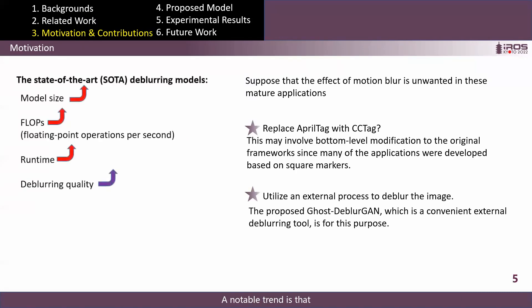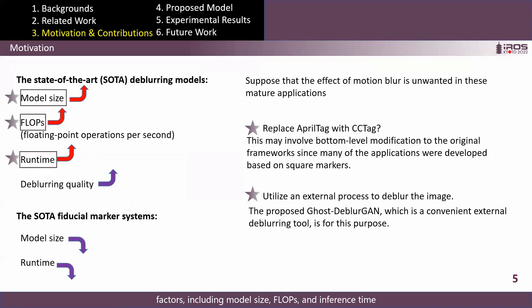A notable trend is that the model sizes and runtimes of the state-of-the-art deblurring models tend to increase along with the deblurring performance. On the contrary, the fiducial marker systems tend to be faster and smaller. Hence, to fill this gap, factors including model size, FLOPs, and inference time, rather than just the state-of-the-art deblurring quality, need to be considered.